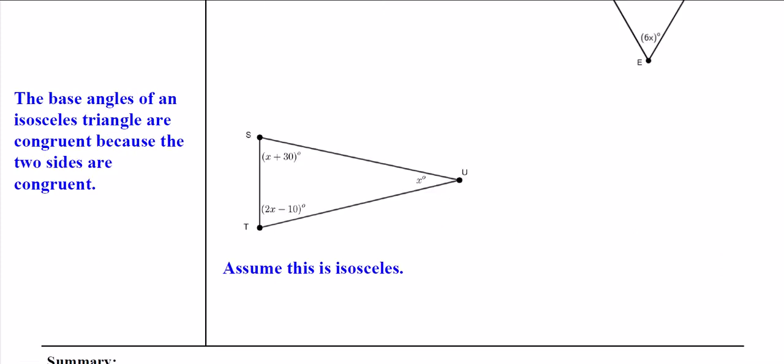An isosceles triangle. So incidentally, for an isosceles triangle we said that the sides were congruent, right? But if these sides are congruent, then we say the base angles are congruent to each other. So we're proposing that this angle is the same as this angle.